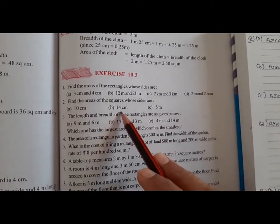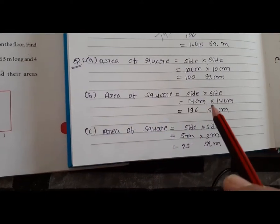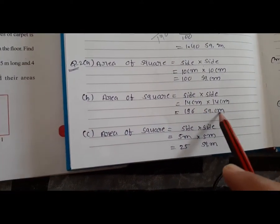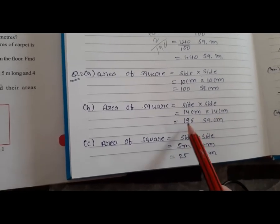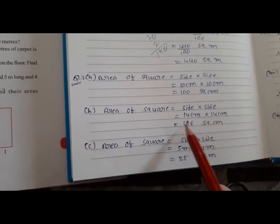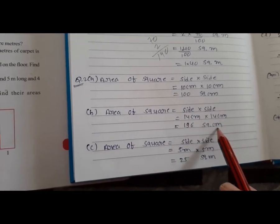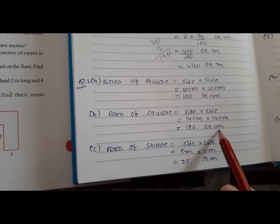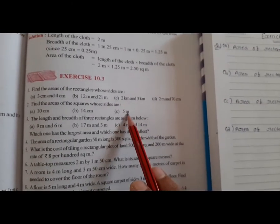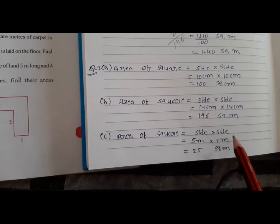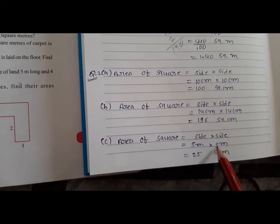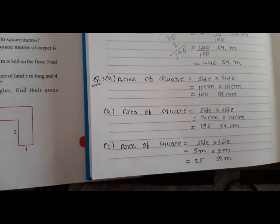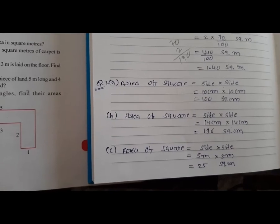Second: area of square equals side multiply side. 14 cm multiply 14 cm equals 196 square cm. Third: area of square equals side multiply side. 5 meter multiply 5 meter equals 25 square meter.